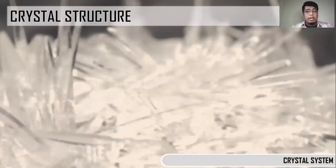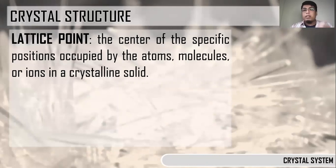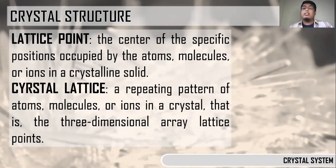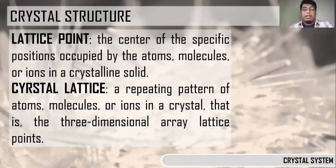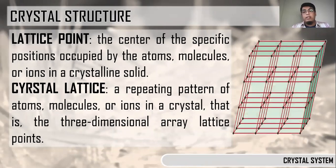Looking further into crystal structure, we have some related terms. The crystal structure is the arrangement of particles in a crystalline solid. First, the lattice point — this is the center of specific positions occupied by atoms, molecules, or ions in a crystalline solid. The crystal lattice is a repeating pattern of atoms, molecules, or ions in a crystal; it is a three-dimensional array.